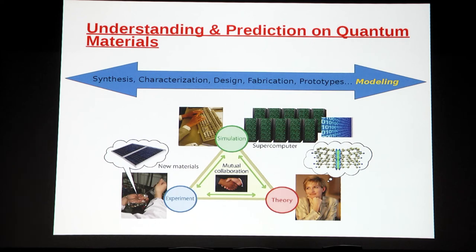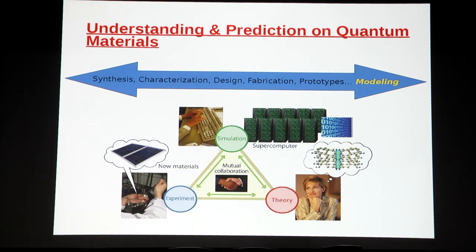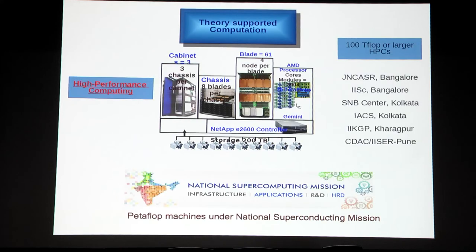Understanding and prediction of quantum materials is not a one-person job — it is teamwork. It requires collaboration among experimentalists, theorists, and simulation scientists like me. It involves synthesis, characterization, design, fabrication, prototyping, and modeling. I am going to tell you how theory-supported computation can be used in understanding and making predictions about quantum materials. Our bread and butter is high-performance computing.